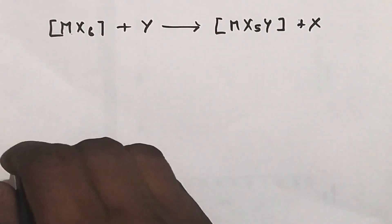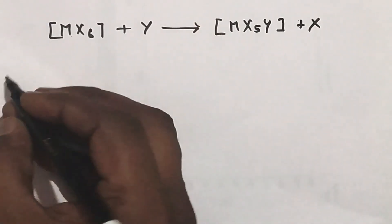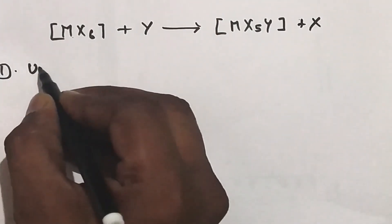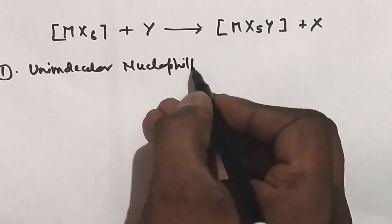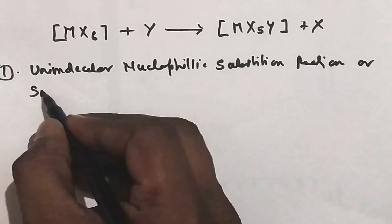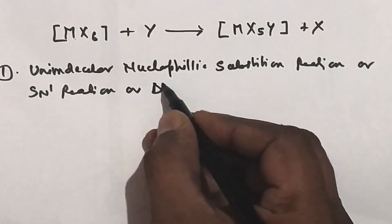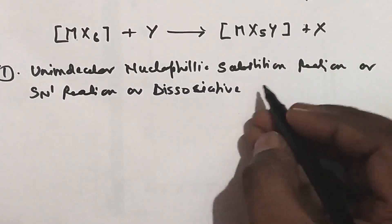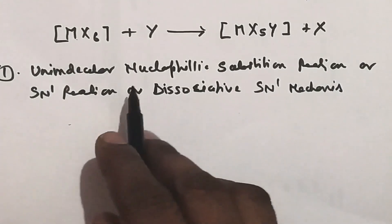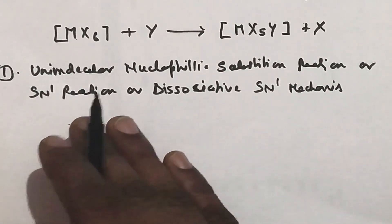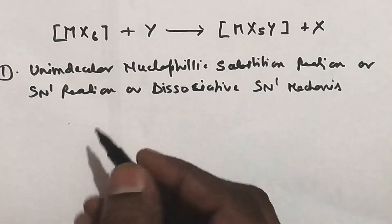From this, we divide our topic into different categories. The first is the unimolecular nucleophilic substitution reaction, also called SN1 reaction or dissociative SN1 mechanism. In most examinations, this reaction can be termed as a unimolecular nucleophilic substitution reaction or a dissociative SN1 reaction.